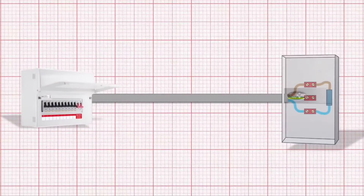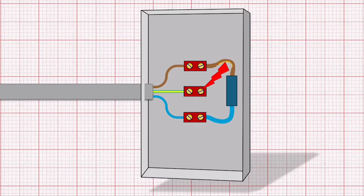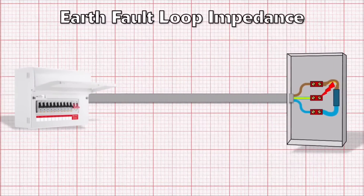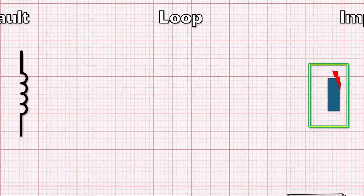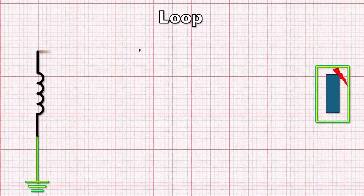But what about when something goes wrong? Let's say a fault occurs and the line conductor comes into contact with the circuit protective conductor via an exposed conductive part — that's the 'earth fault' part of earth fault loop impedance. The 'loop' part describes the path that the current caused by the earth fault will run through. It consists of the line conductor in the supply cable to the property,